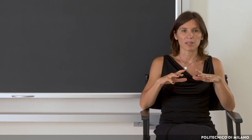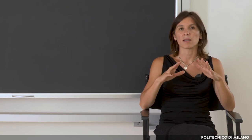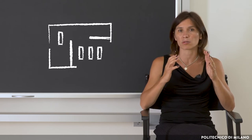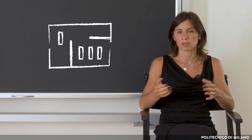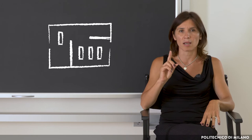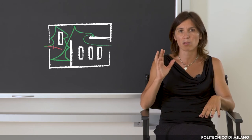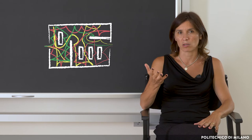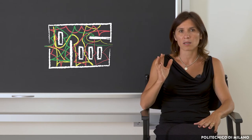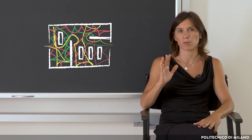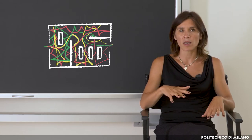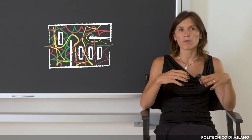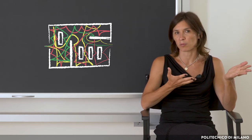A second key element to keep in mind is the narrative structure — in other words, the architecture of our content. Let's think, for example, how many possible pathways we can use to visit an exhibition. Each path gives us a different perspective. In the same way, the narrative structure of content influences its reception and interpretation.